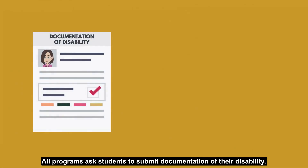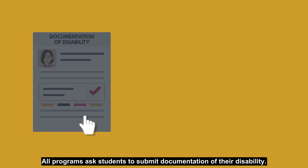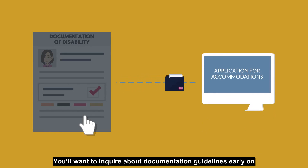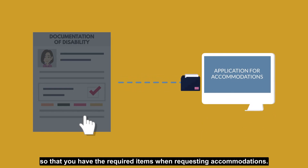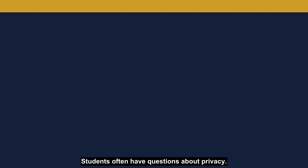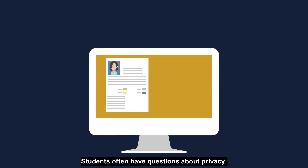All programs ask students to submit documentation of their disability. You'll want to inquire about documentation guidelines early on so that you have the required items when requesting accommodations. You can usually find these items on the Disability Office's website. Students often have questions about privacy.